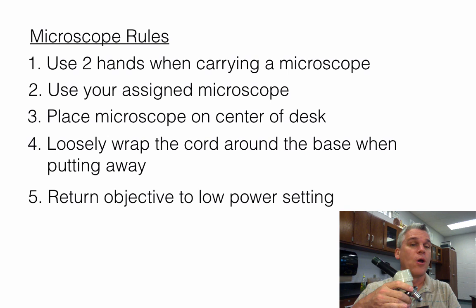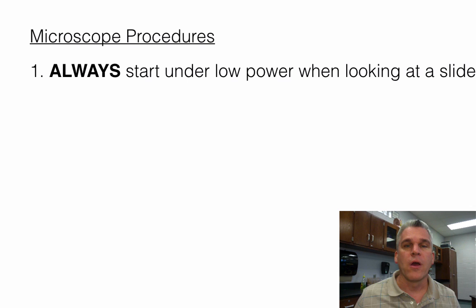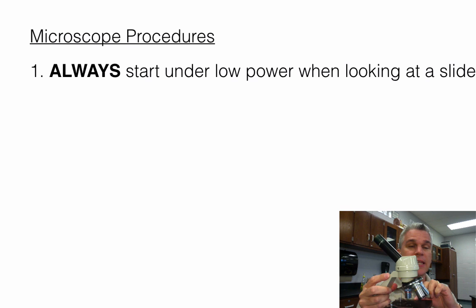What are some of the procedures we use when using a microscope? We always start looking at the object under low power. No matter what the object is, we put the slide on the stage, put the clips on, and then start under low power — never under medium or high. Even if the directions say to look at something under high power, you're going to start with low power.